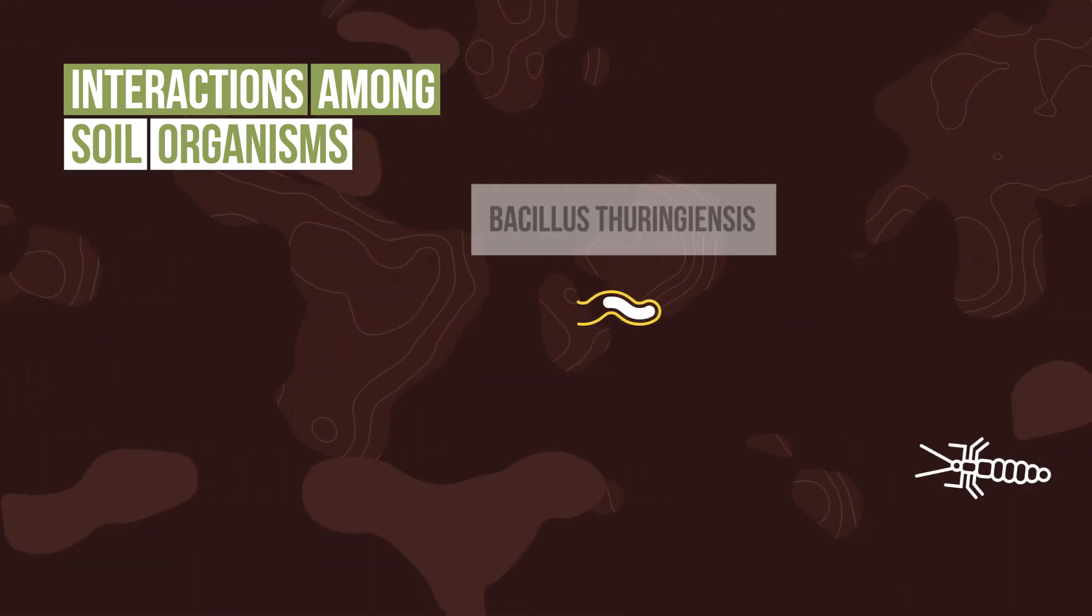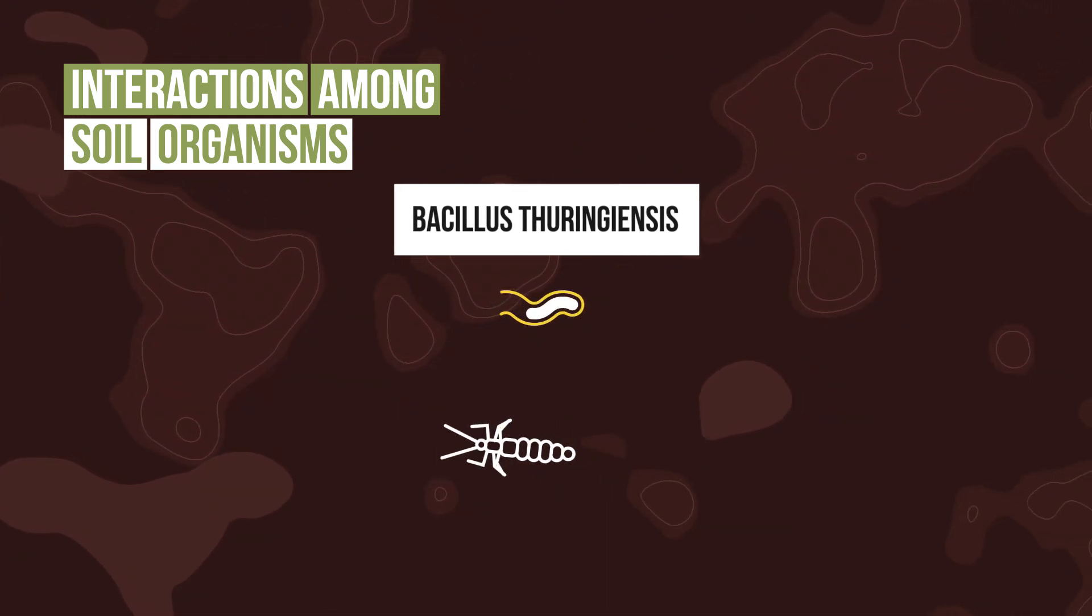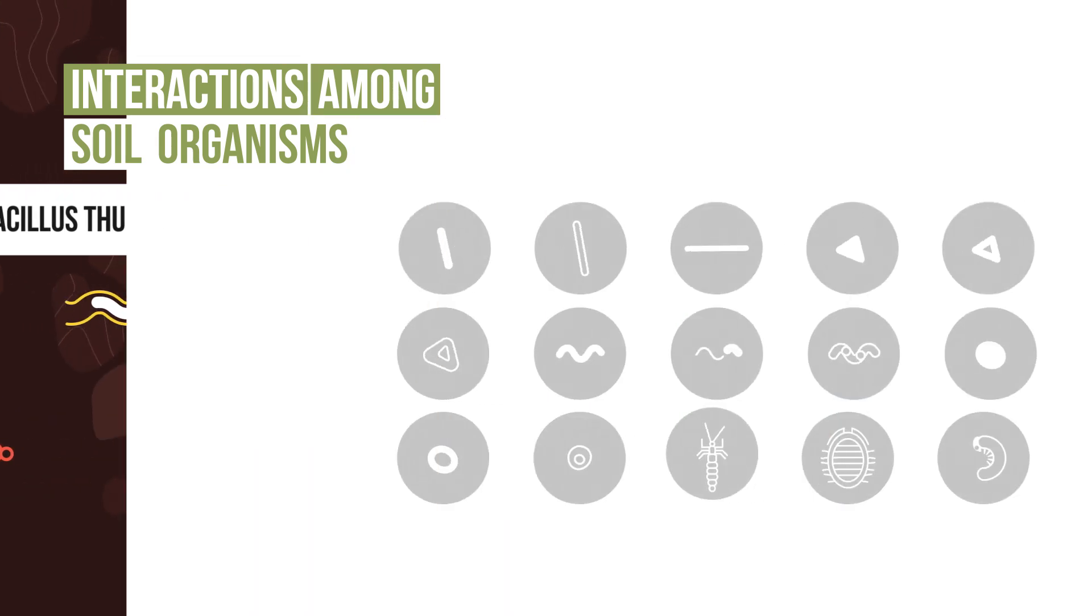The soil bacterium Bacillus thuringiensis produces proteins that can be toxic to other organisms, including insect larvae.